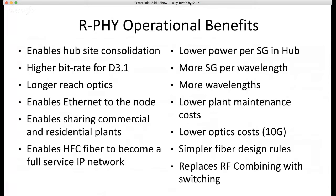Lower power per service group in the hub, more service groups per wavelength, lower plant maintenance costs, lower optics cost. The digital optics are in a small SFP — Small Form-factor Pluggable. That's not like the analog lasers and transmitters that have their own little chassis. SFPs are on the CMTS, on the switches, and in the Remote PHY node. If optics go bad, you pull the SFP out and put in a new one. They're on an ITU grid for DWDM, and you can buy SFPs for long reach or short reach.